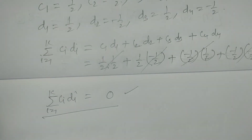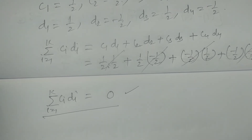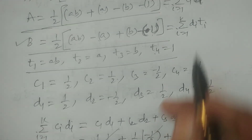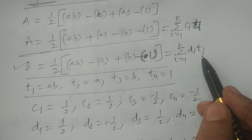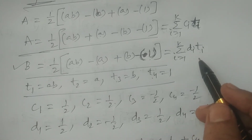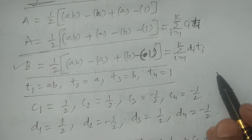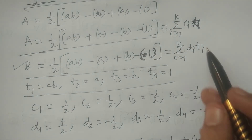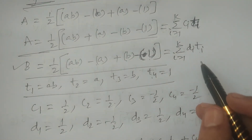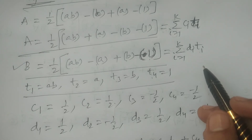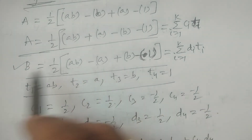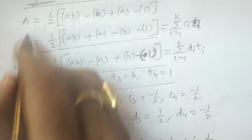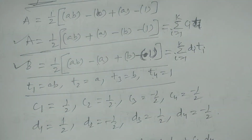Therefore, the linear combinations Σ Ci·Ti and Σ Di·Ti of treatment means T1, T2, T3, T4 (that is AB, A, B, 1) are orthogonal. Since they are contrasts and orthogonal, the main effects of A and B are orthogonal contrasts.